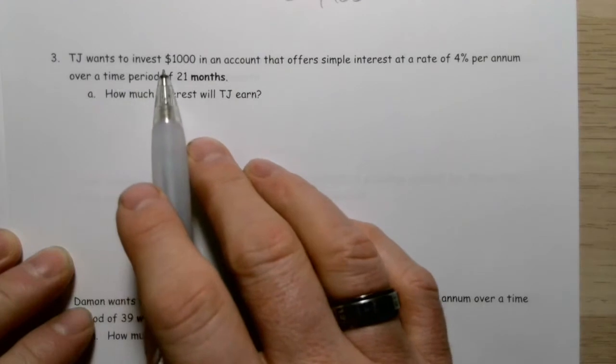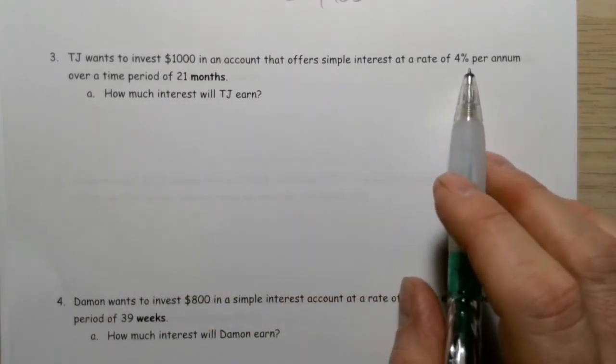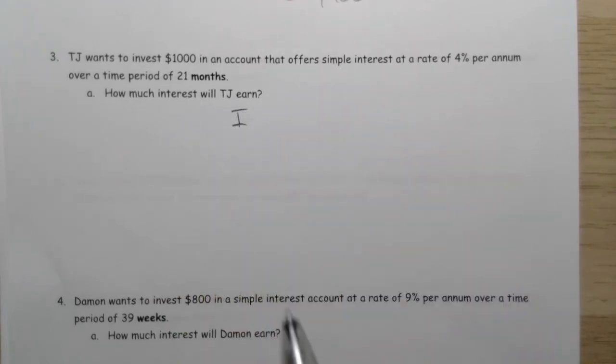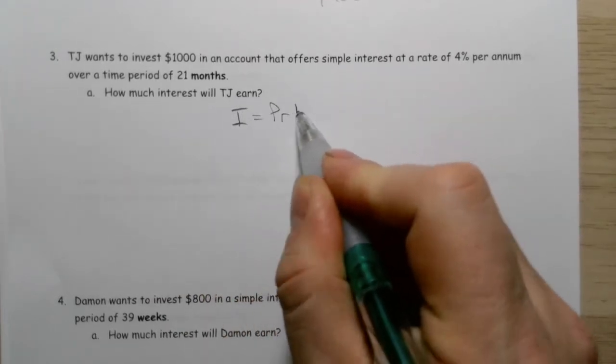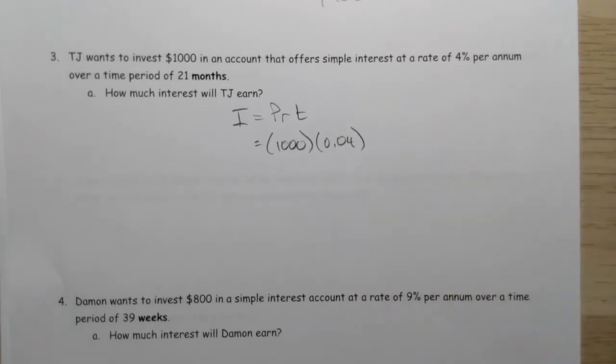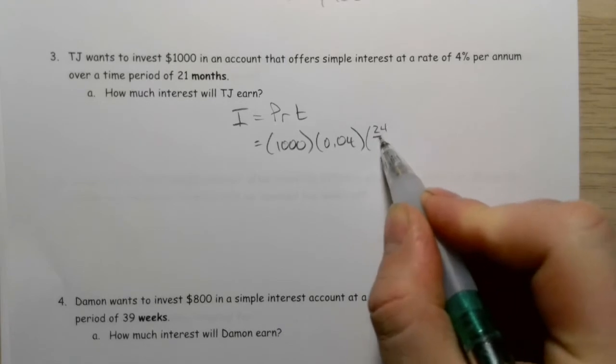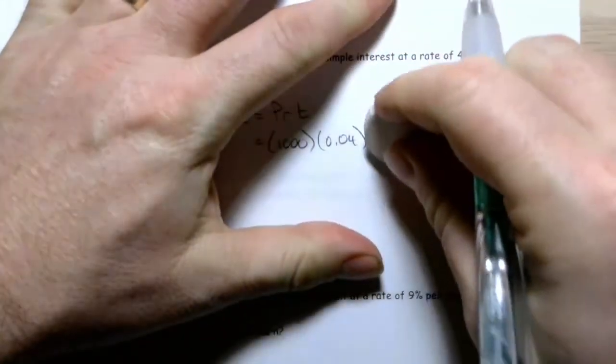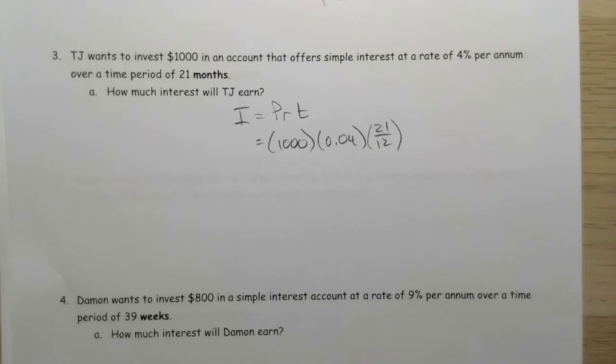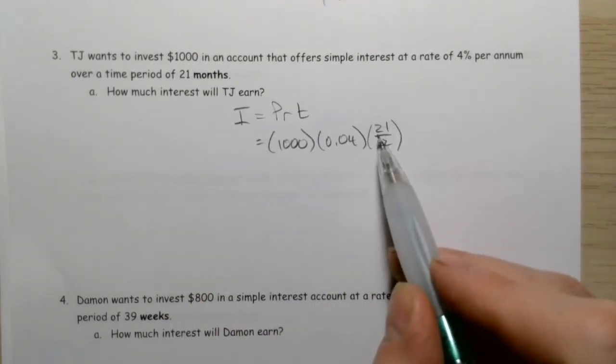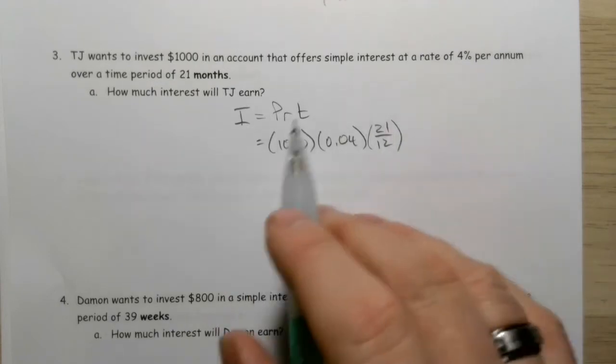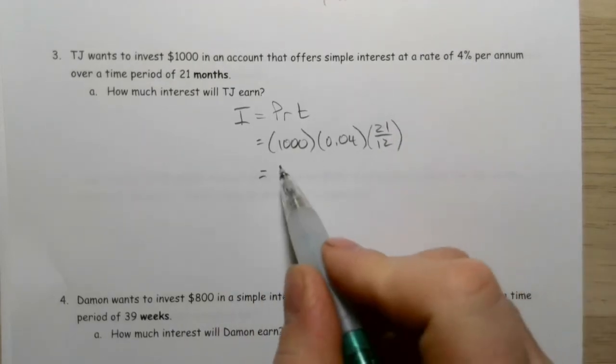TJ wants to invest $1,000 in an account that offers simple interest at a rate of 4% per annum over 21 months. So now we've played with the time. Interest equals PRT. Our initial investment is $1,000, our rate is 0.04. But we're giving it in terms of months, so we're going to convert this: 21 months over 12. There are 12 months in a year, so I take the number of months and divide by the number of months in a year. That gets me the amount of time in terms of years. When you multiply that through, you get $70.